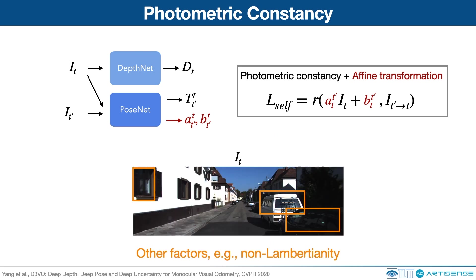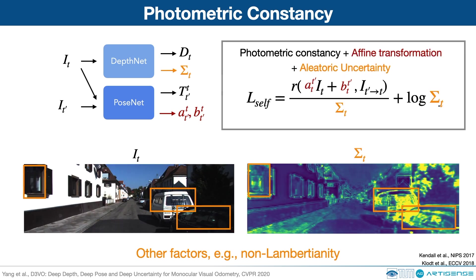However, only modeling the illumination change is not enough to capture all failure cases of the photometric constancy assumption. Other cases, for example non-Lambertian surfaces like windows in the image, can also violate the assumption but are hard to model explicitly. Therefore, we leverage the concept of aleatoric uncertainty, which we name sigma, to model the other factors which violate the photometric constancy.